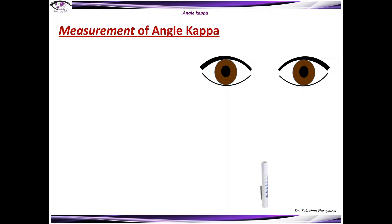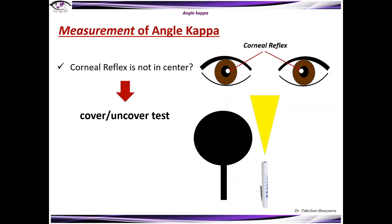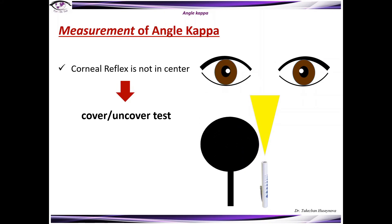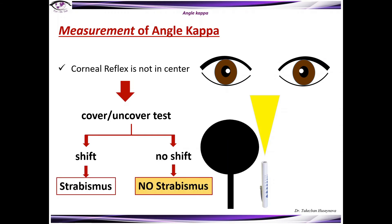For the measurement of angle kappa, we need to evaluate the position of the corneal light reflection while the patient fixates monocularly on a pen light. If the corneal reflex is not in the center, then we have to perform a cover and uncover test in order to define pseudostrabismus. If there is a shift by cover and uncover test, then this means the patient has strabismus. If there is no shift, then the patient has no strabismus or pseudostrabismus.